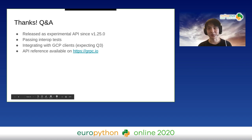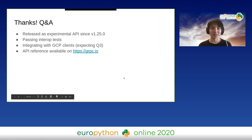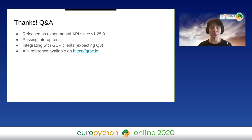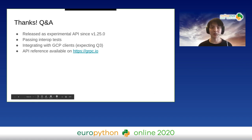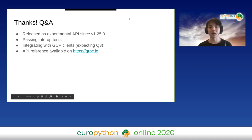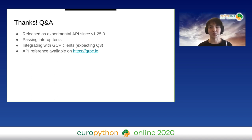Thank you Paul for introducing our async IO integration. The gRPC async IO API has been released as an experimental API since version 1.25 — feel free to give it a try. It already passes all the integration tests, meaning it integrates well with all other Python language features and historical versions of gRPC. We are also integrating it with Google Cloud Platform clients and expecting some of them to be released in Q3 2020. The API reference can be found on the grpc.io website.